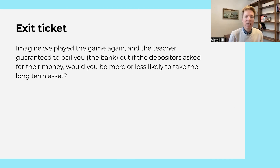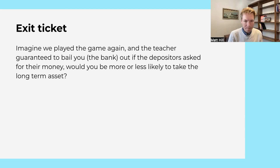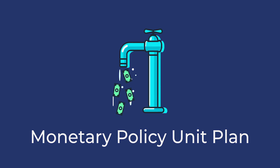In the exit ticket, we're gesturing toward this: imagine somebody guaranteed your money — even if you went into long-term assets, they'd cover you. Would you be more or less likely to take the long-term asset? What we're gesturing at here is what we're going to cover in Day 2. You can get the monetary policy unit plan here or click for the next video.